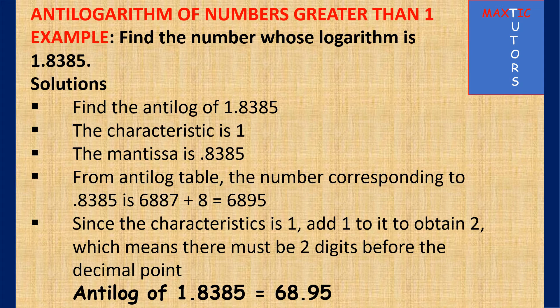Now let's look at antilog. Antilog is the opposite of logarithm. This example says find the number whose logarithm is 1.8385 — that means find the antilog of 1.8385. The characteristic is 1 because we have 1 digit before the decimal. The mantissa is the number after the decimal which is 0.8385. From your antilog reading table in the four-figure tables, the number corresponding to 0.8385 is 6887.